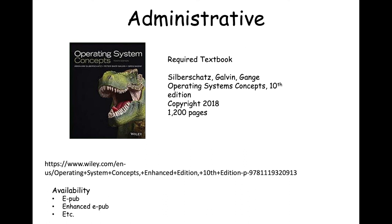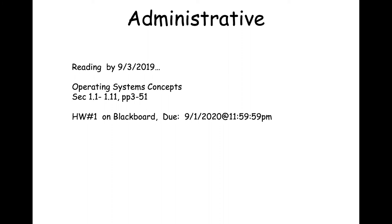The reading due by September 3rd, 2020 — that's a typo in the slides, not 2019 — covers Operating Systems Concepts, Section 1.1 to Section 1.11, pages 3 through 51. It's not a lot of reading but it's important to do a little each night. Homework number one has been released on the Course Blackboard site. It's due September 1st at 11:59 and 59 seconds. Late homework will not be accepted.